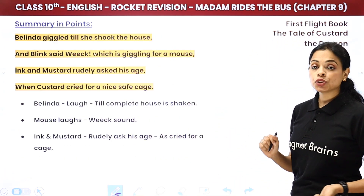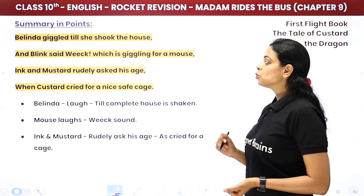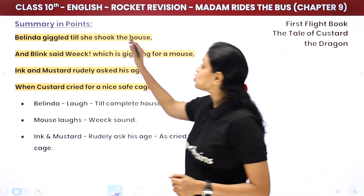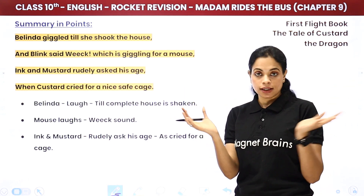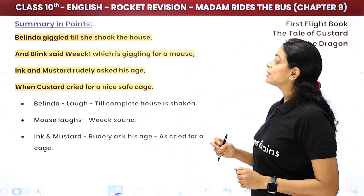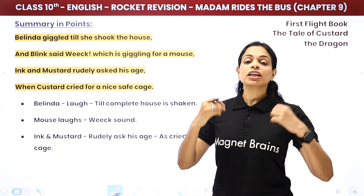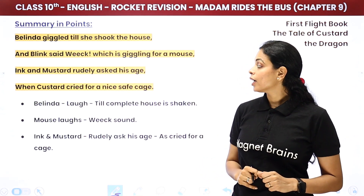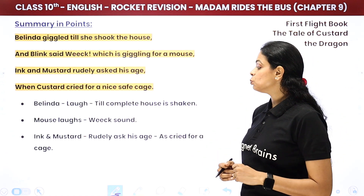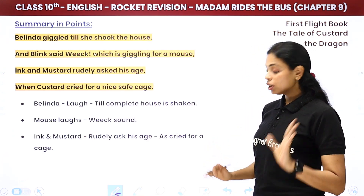Belinda giggled till she shook the house, and Blink said 'weak' — which is giggling for a mouse, making a tiny weak sound. Ink and Mustard rudely asked his age. When Custard cried for a nice safe cage — Custard just kept saying he didn't want any trouble and only wanted to go into a cage.